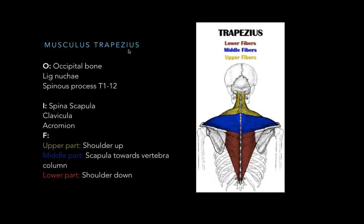Musculus trapezius has three different origin points: the occipital bone, then fusing with the ligament of the cervical vertebrae, and sitting on the spinous process of the thoracic vertebrae T1 to T12. It has three different insertion points — it inserts at the spina scapula, and on the front it inserts at the clavicula and the acromion. The upper part lifts the shoulder up, the middle part pulls the scapula towards the vertebral column, and the lower part pulls the shoulder down.